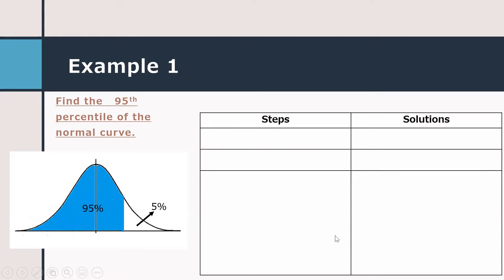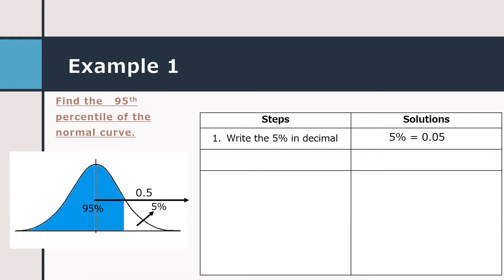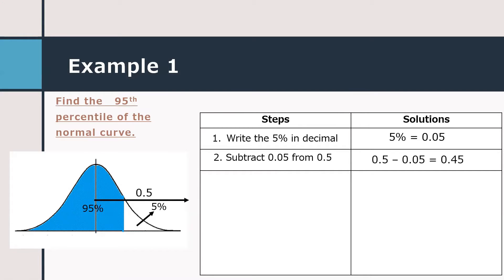We have the following steps. Step one: write 5% in decimal, so that is 0.05. We know that half of the distribution is 0.5. To find the area corresponding to the 5%, we subtract 0.05 from 0.50, and that gives us 0.45.